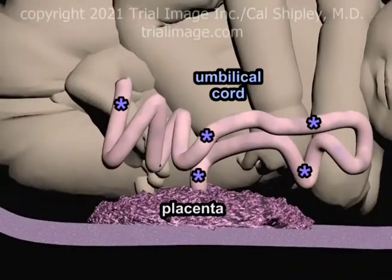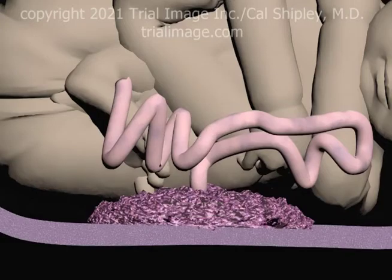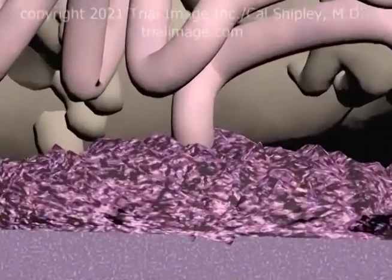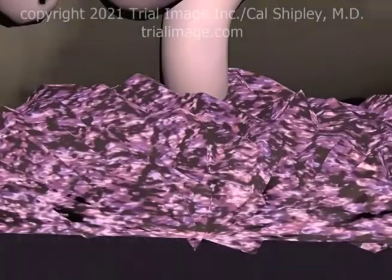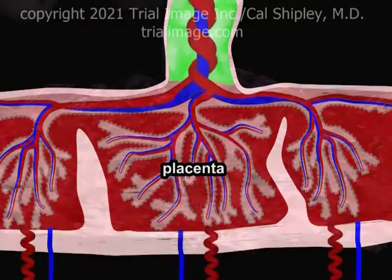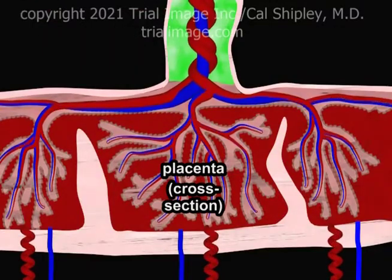The placenta is attached to the uterine wall and is connected to the fetus via the umbilical cord. The primary function of the placenta is to facilitate transport of nutrients and waste products between the mother and the fetus. To better understand how the placenta works, let's take a look at a view in cross-section.